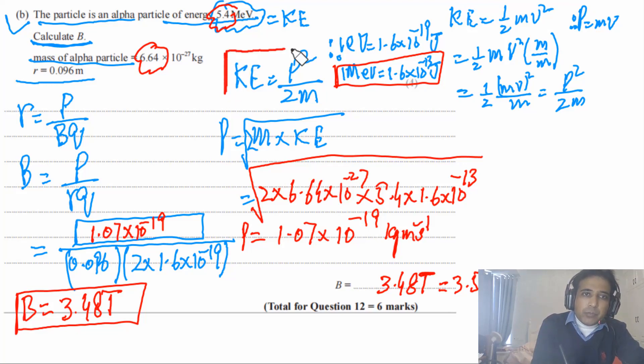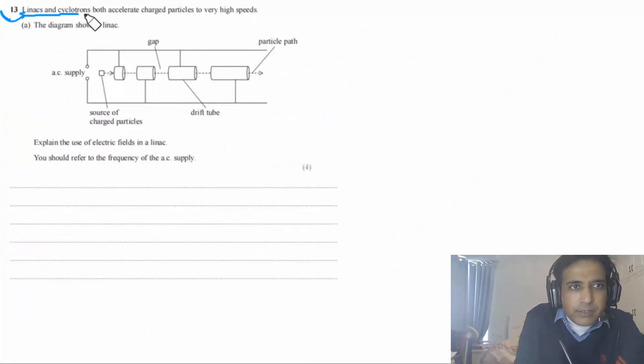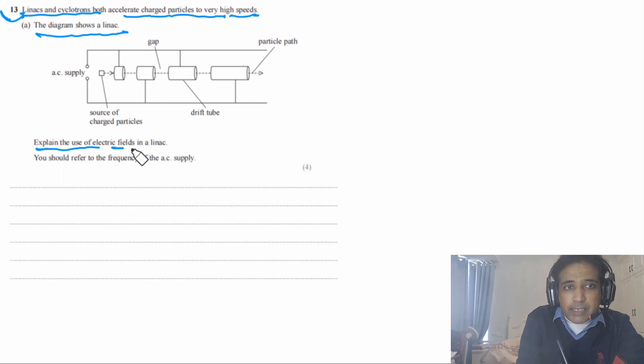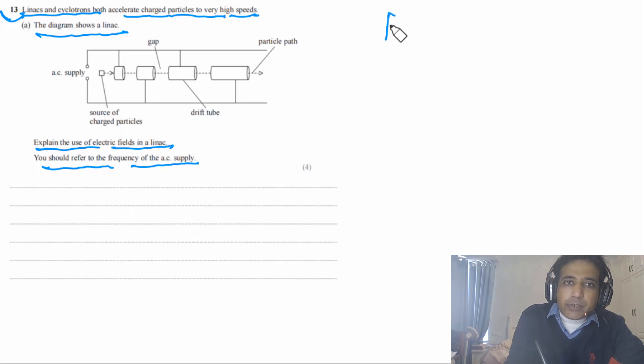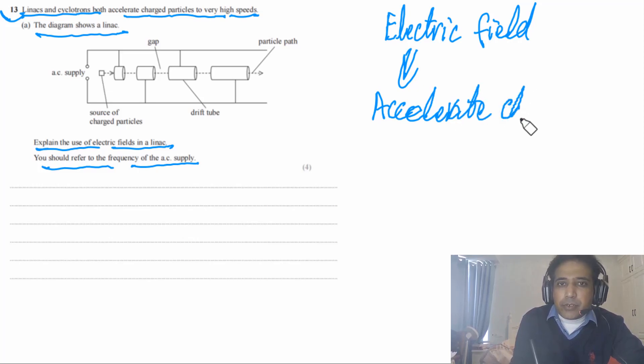The main concept is linking kinetic energy with momentum — most students struggle with this. Question 13 says: linacs and cyclotrons both accelerate charged particles to very high speeds. The diagram shows a linac. Explain the use of electric fields in a linac, referring to the frequency of the AC supply. A linear accelerator uses an electric field to accelerate charged particles — this is the main principle.